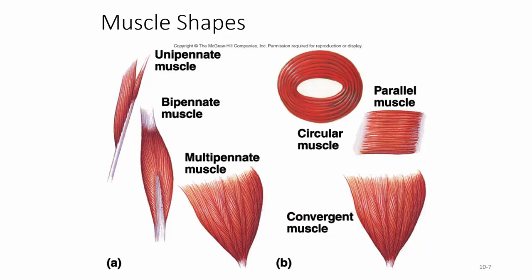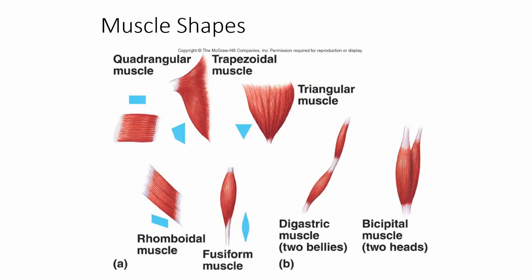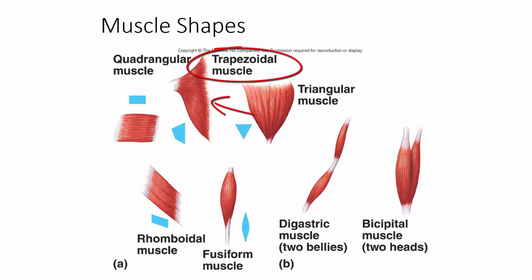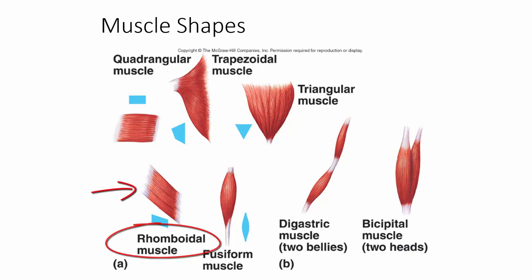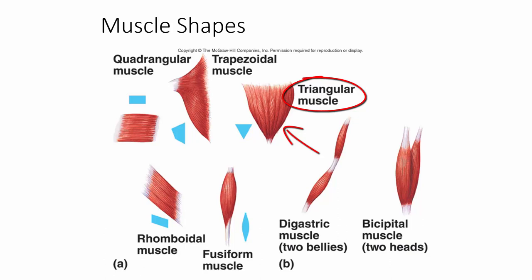Other muscle shapes include parallel and circular muscles. Some shapes are reflected in muscle names: the quadrangular shape corresponds to muscles like quadratus femoris or pronator quadratus; the trapezoidal shape corresponds to the trapezius; the rhomboidal shape corresponds to the rhomboids; and the triangular shape — like an upside-down delta — corresponds to the deltoid.